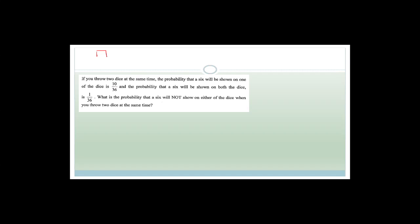You could have: 1&6, 2&6, 3&6, 4&6, 5&6, and 6&6 — that's six. Then also 6&1, 6&2, 6&3, 6&4, and 6&5 — another four, giving 10 out of 36. The probability that a six will be shown on both dice is only 1 out of 36 — that's just the combination 6&6.